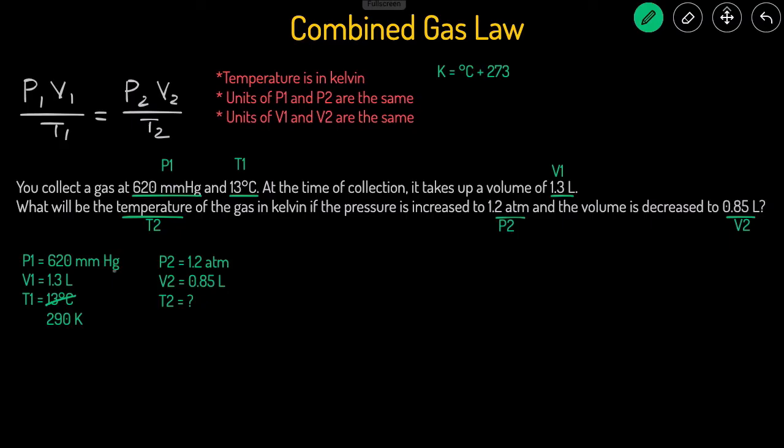Next, are the units of P1 and P2 the same? P1 is in millimeters of mercury. P2 is in atm. So they're not the same. I'm going to convert them both into atm.